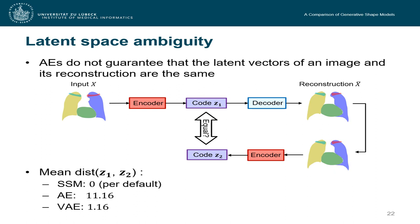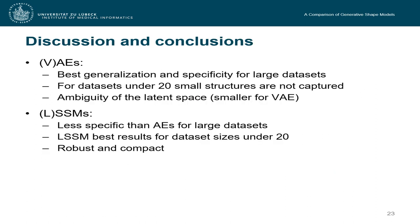And every time we reconstruct an image and reconstruct its reconstruction again and again and again, we will land on a different spot in the latent space moving through it. So to conclude, I presented you a comparison between different shape models, two conventional shape models and two deep learning methods. The deep learning methods delivered best generalization and specificity for larger datasets.